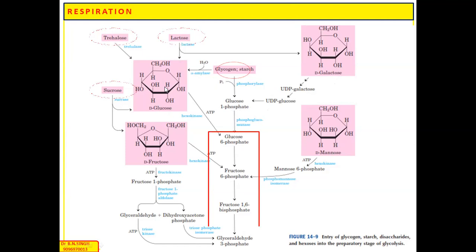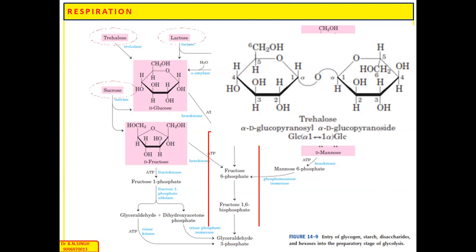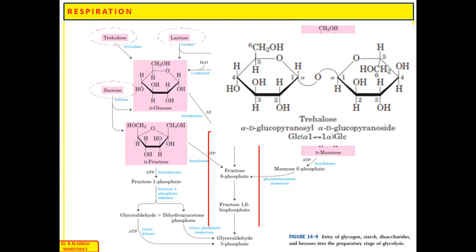Glucose is the basic substrate for glycolysis and enters directly. Trehalose is a disaccharide formed by alpha-1,1-glycosidic bonding between two glucose molecules. When trehalase breaks down trehalose, it produces two glucose molecules which enter glycolysis. Sucrose is the non-reducing sugar formed by glycosidic bonding between glucose and fructose.